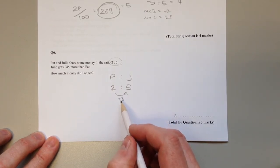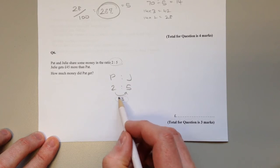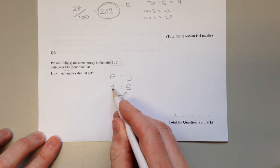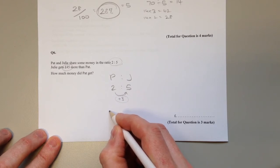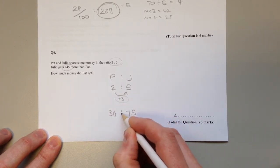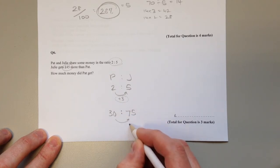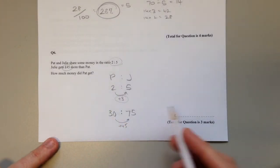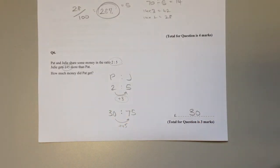So what you need to do is see how many of those go into that. And there are 15, so if we give Pat 15 times more and give Julie 15 times more, then these numbers are in the same ratio. But now if you compare them, they have a difference of 45. How much money did Pat get? Pat gets 30 pounds.